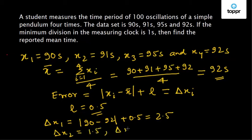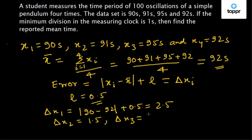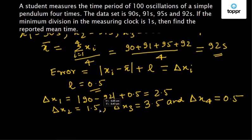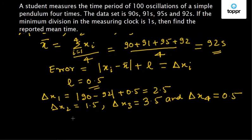delta x3 equal to 3.5 and delta x4 equal to 0.5. So now let us calculate the mean of this error.